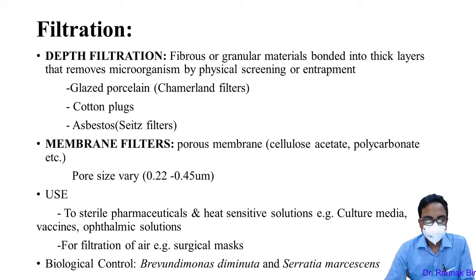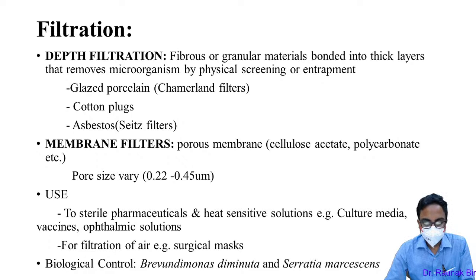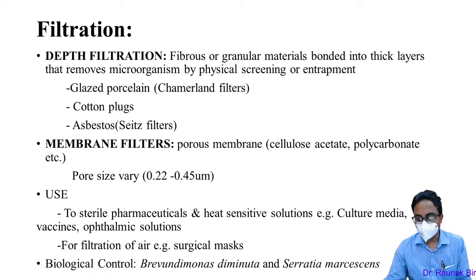Pore sizes are of three types: 0.22, 0.45, and 0.8 micrometers. These are used for pharmaceutical and heat-sensitive solutions, cultured media, vaccines, ophthalmic solutions, and filtration of air by surgical mask. The biological controls used are Brevundimonas diminuta and Serratia marcescens, because they are very small in size.